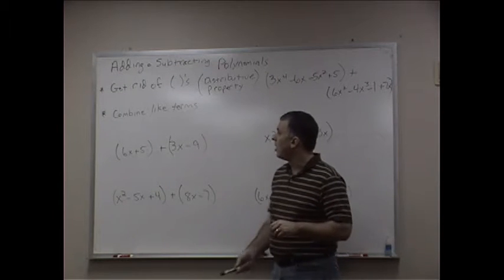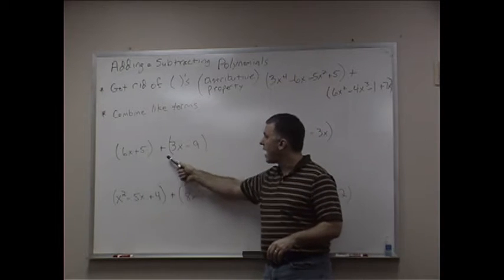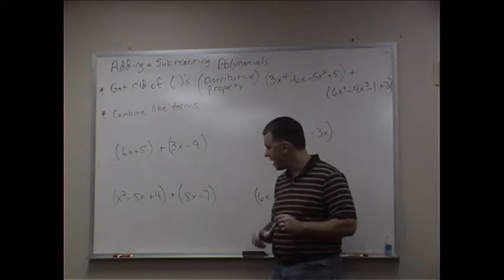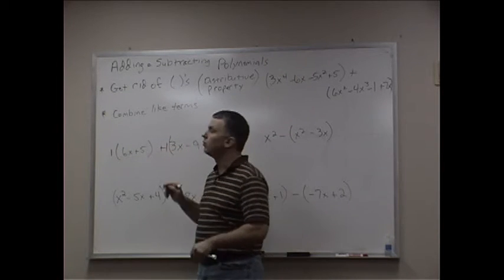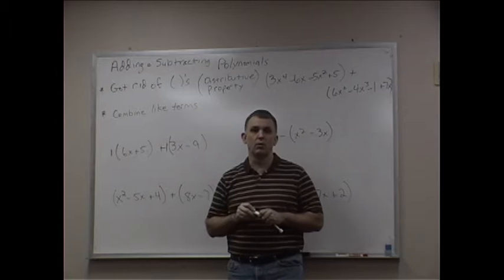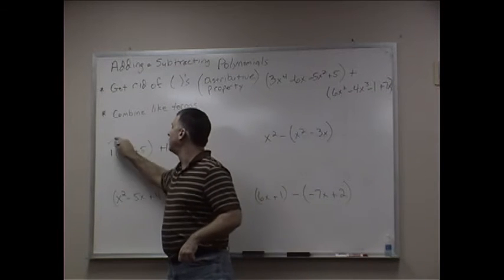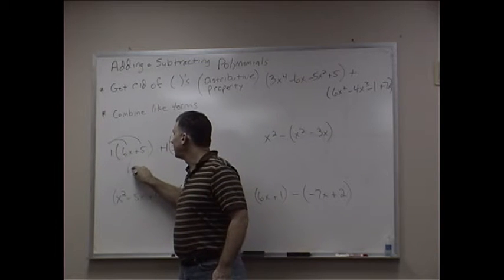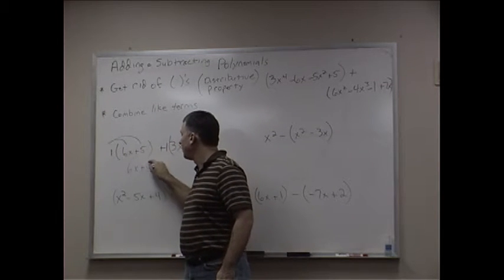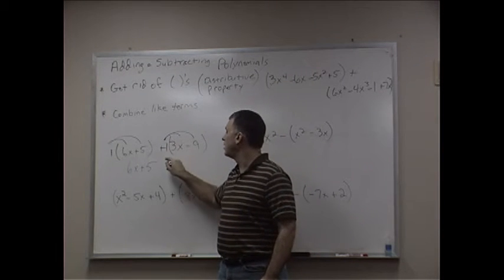So let's look at our first example. We have 6x plus 5 plus 3x minus 9. Now, there is a 1, an understood 1, outside of here when we do this. So when I distribute the 1 to the 6x and to the 5, it gives me 6x plus 5.